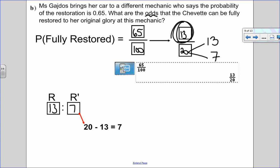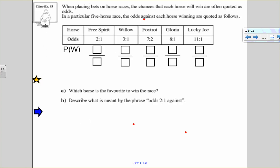Okay, let's look at another example, where we're going to be going again between odds and probability. So when placing bets on a horse race, and boys and girls, it's not a good idea to gamble. This is only for mathematical purposes. The chances that each horse will win are often quoted as odds. So in a particular five horse race, the odds against each horse winning are listed as follows. Now remember against is just not winning to winning. So all of these odds here are listed as odds against.